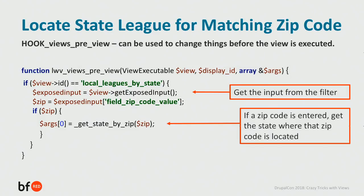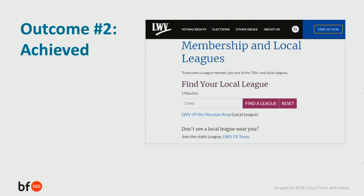To finish outcome two, we use hook_views_pre_execute, which is used to change things before the view is executed. In this hook, we grab the value of the zip code the user is entering and pass it to a function called getStateByZip — a function we created. It takes a zip code value and returns the state term ID. We set it to args zero, putting the term ID back in the URL so it's used as a filter value, which gives us the state league in the footer region. Now we've achieved outcome two.